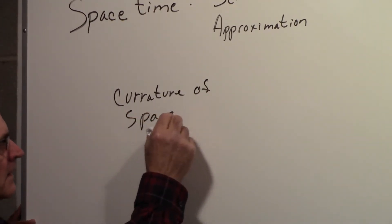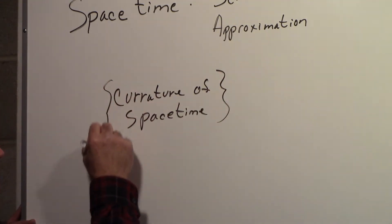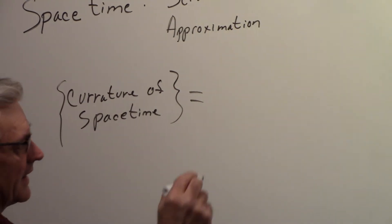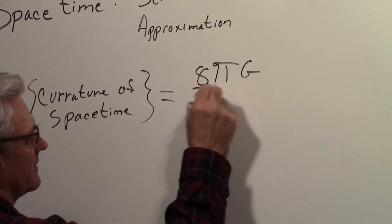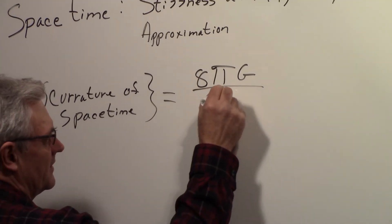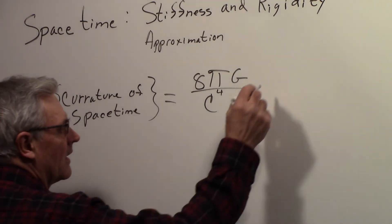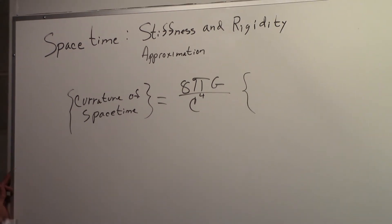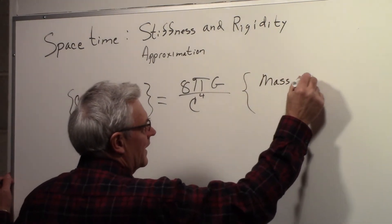in some approximate general sense, is equal to that constant, 8πG, 8π times the gravitational constant, divided by c to the 4th, the speed of light to the 4th power, and we could look at the remaining part on that side to be representative of a mass-energy term.